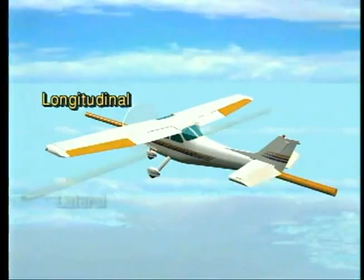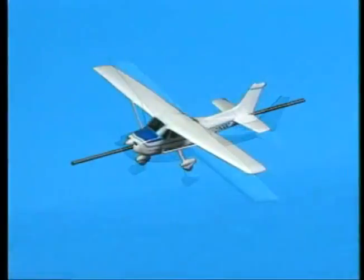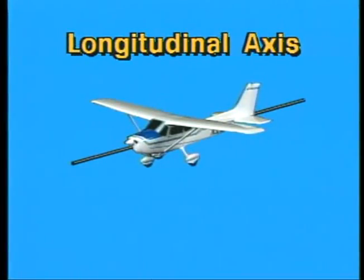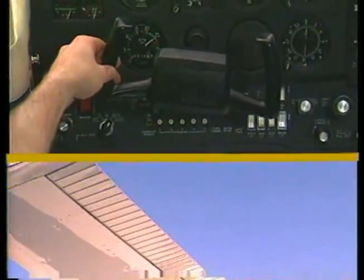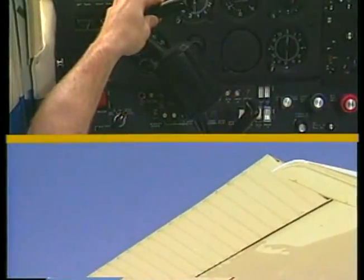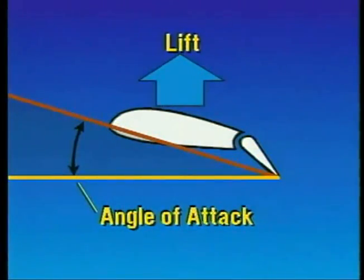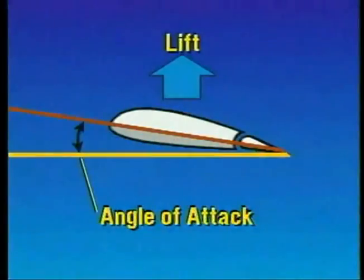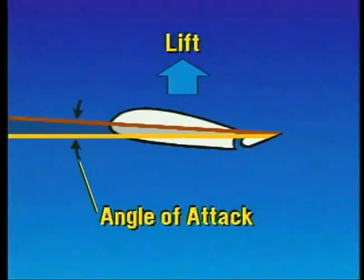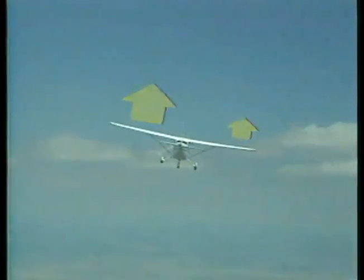The ailerons, elevators, and rudder create aerodynamic forces which cause the airplane to rotate about the three axes. When an airplane is banked, it rolls about the longitudinal axis. For a right bank, you rotate the control wheel to the right, moving the left aileron down and the right aileron up. As the left aileron moves down, the angle of attack and the camber increase, producing more lift on the left wing. Conversely, as the right aileron moves up, the angle of attack and camber decrease, producing less lift. This difference in lift causes the airplane to roll about the longitudinal axis.